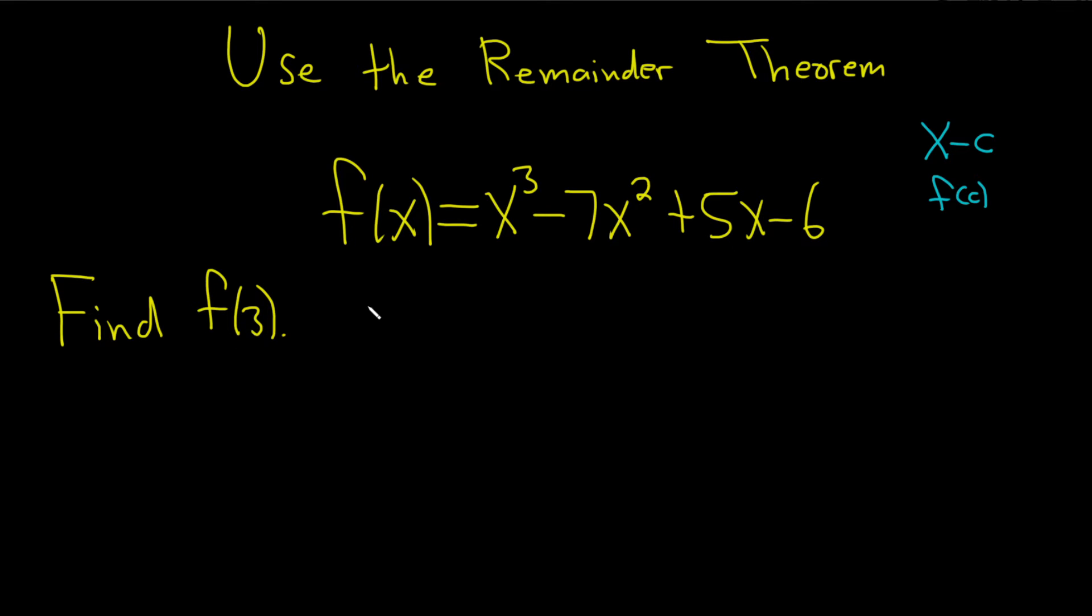So here we want to find f of 3, so we have to divide this by x minus 3. In order to divide this by x minus 3, we're going to use synthetic division.